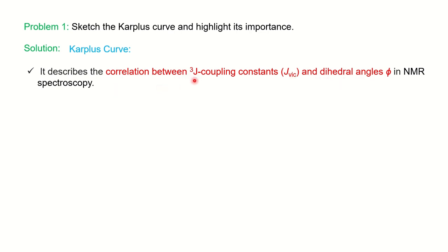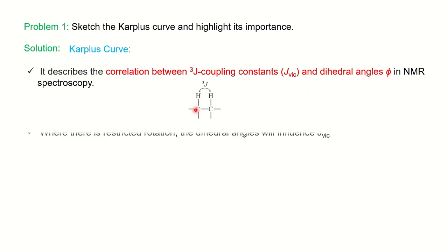We have already discussed the coupling constant in the previous video. Vicinal coupling is a 3-bond coupling between two protons — you can see two protons connected through 3 bonds. The dihedral angle between the two protons is represented by phi (φ). We will see this in detail later.